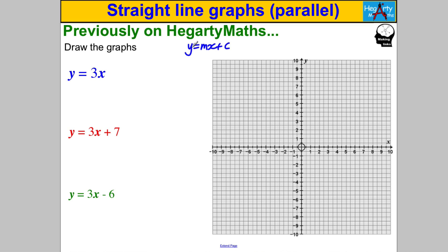Okay, you should have got the following. What you would have done, say for this one, you know the gradient is 3, you know the y-intercept is 0,7. So starting at 0,7, every time you go across 1 you go up 3, and similarly with the others.